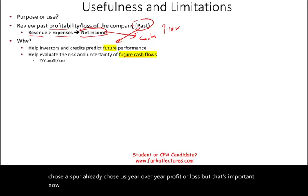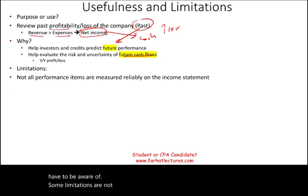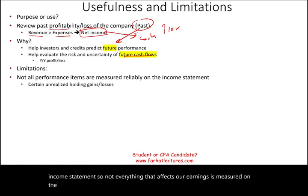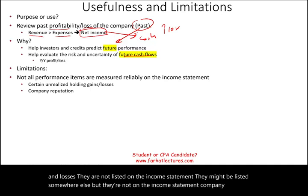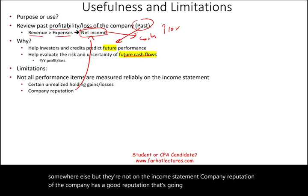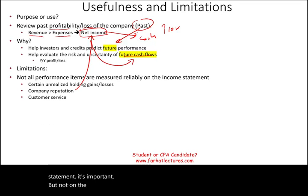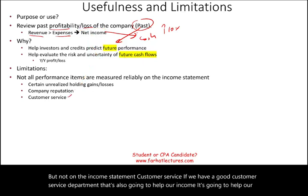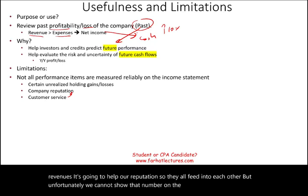The income statement has important limitations we must be aware of. First, not all performance items are measured reliably on the income statement. Not everything that affects earnings or expenses is listed there. Certain unrealized holding gains and losses are not listed on the income statement — they may be listed somewhere else. Company reputation, for example, will improve net income and cash flow, but it's not on the income statement. Similarly, good customer service will help revenues and reputation, but unfortunately we cannot show that number on the income statement in any way, shape, or form.